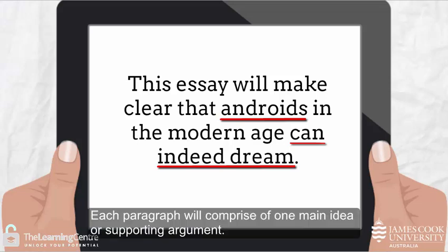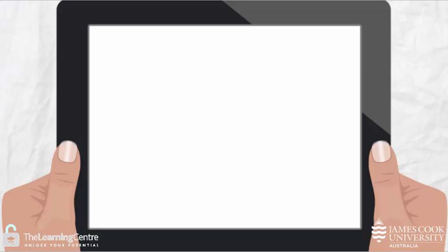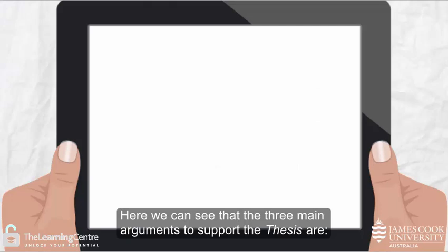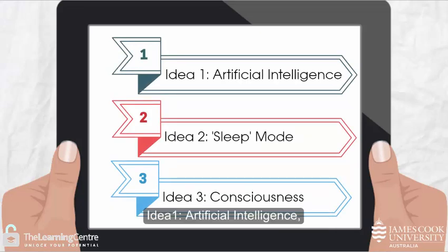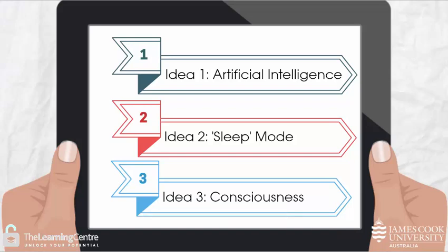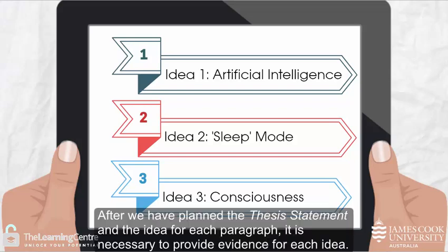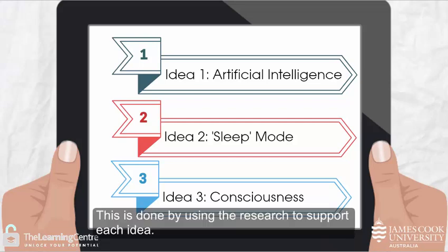To create our three body paragraphs we need to present evidence supporting this. Each paragraph will comprise one main idea or supporting argument. Here we can see that the three main arguments to support the thesis are: idea one — artificial intelligence; idea two — sleep mode; and idea three — consciousness. After we have planned the thesis statement and the idea for each paragraph, it is necessary to provide evidence for each idea. This is done by using the research to support each idea.